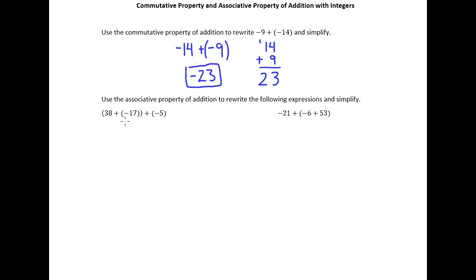In the next example, we're going to look at the associative property of addition to rewrite these two expressions and then simplify. So remember the associative property is just saying that you can choose whatever two numbers you want to add first before adding any other numbers. And so right now this expression is saying add 38 and -17 first and then after that add -5.